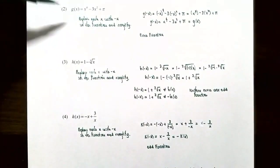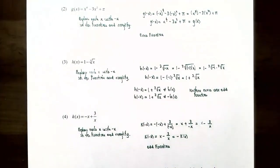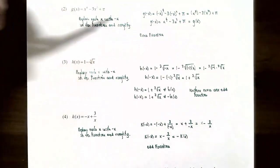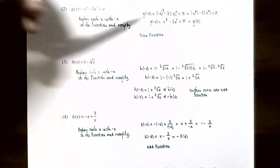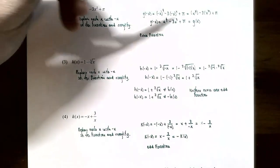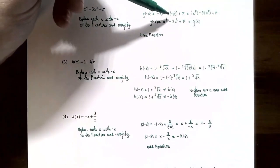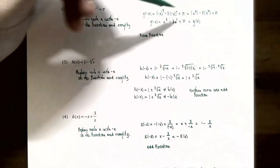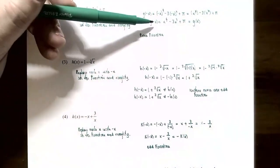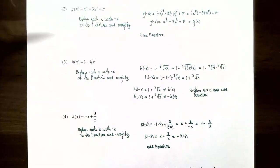Number two, g(x) = x⁴ - 3x² + π. Replace each x with -x: g(-x) = (-x)⁴ - 3(-x)² + π = x⁴ - 3x² + π. This is exactly the same as the original function, so g(-x) = g(x). This means g(x) is an even function, and its graph will be symmetric with respect to the y-axis.